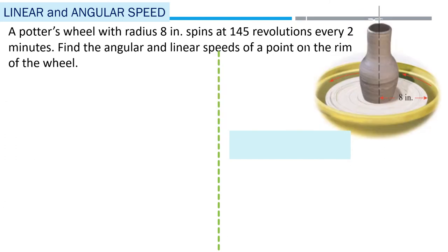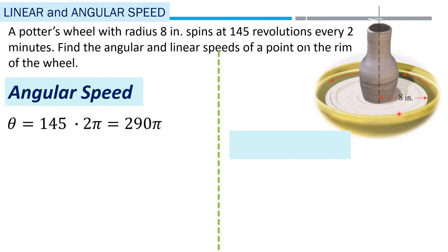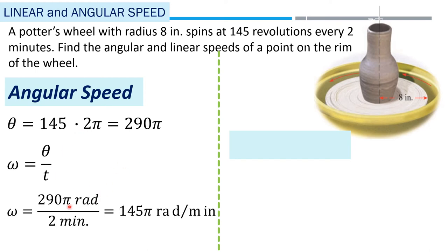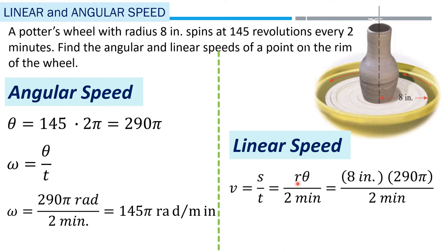Next example: A potter's wheel with radius 8 inches spins at 145 revolutions every 2 minutes. For angular speed: 145 revolutions multiplied by 2 pi equals 290 pi radians. Dividing theta by time gives 290 pi over 2 minutes, which equals 145 pi radians per minute. For linear speed: s equals r times theta, so 8 inches times 290 pi divided by 2 gives 1160 pi inches per minute.